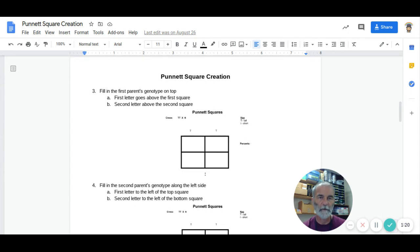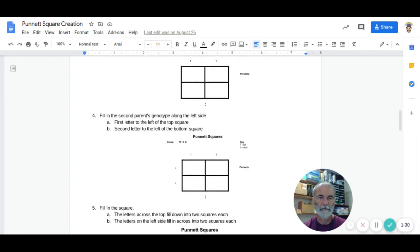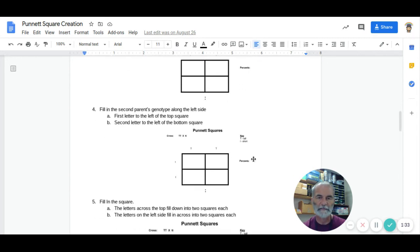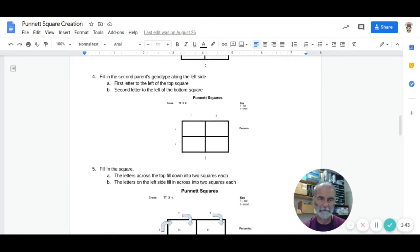The third thing we do is fill in the first parent's genotype across the top of the square. You can see here I have a capital T and a capital T. Then we fill in the second parent across the side of the square. The first letter goes beside the top left square, and the second letter goes beside the bottom left square. Little t, little t.